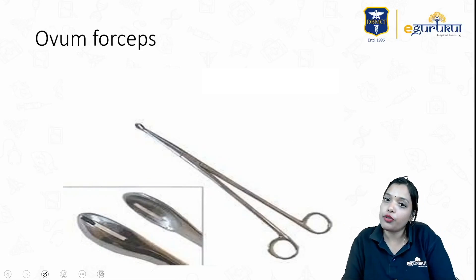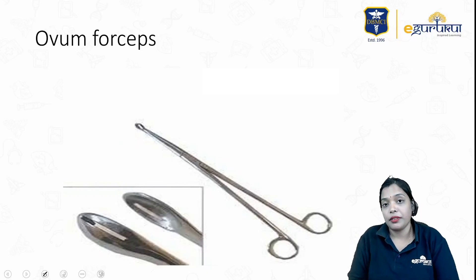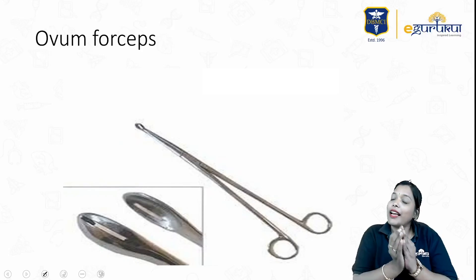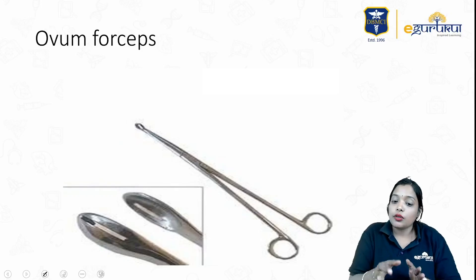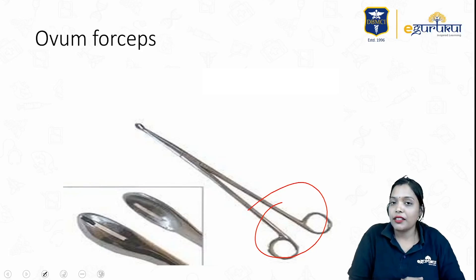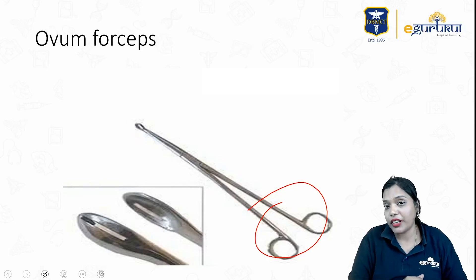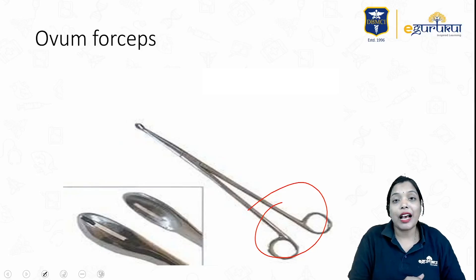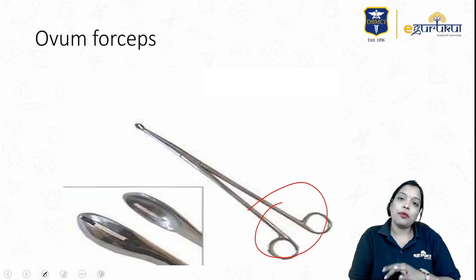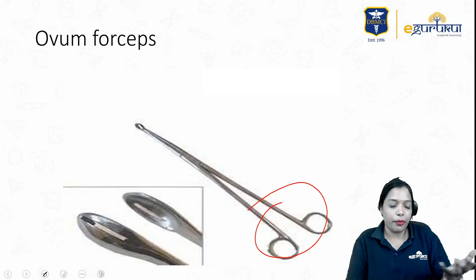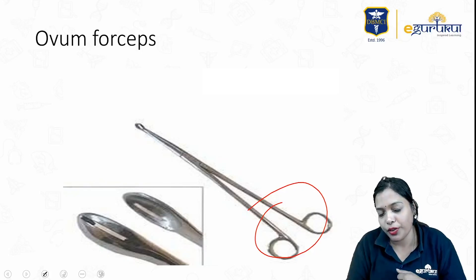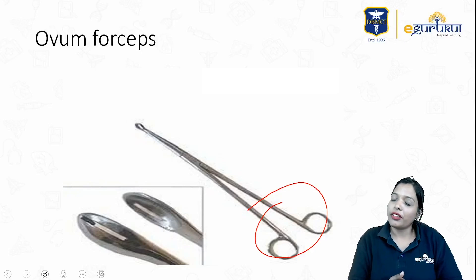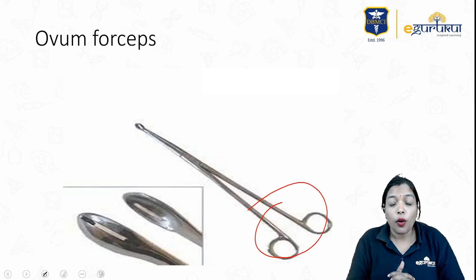The last forceps is the ovum forceps, which is cup-shaped and atraumatic. It does not have a lock, unlike all the other forceps shown. It is used for dilatation and evacuation. That covers the important instruments. Thank you for watching, keep studying, all the best.